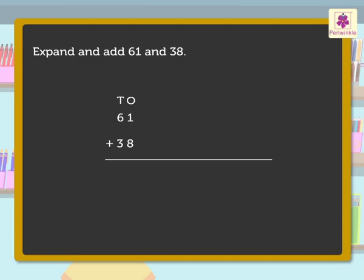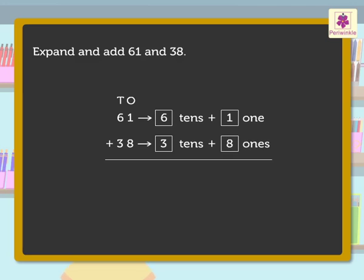61 is written as 6 tens and 1 one, and 38 is written as 3 tens and 8 ones. Now add ones and tens: 1 one plus 8 ones equals 9 ones, and 6 tens plus 3 tens equals 9 tens. Thus, 9 tens and 9 ones is equal to 99.